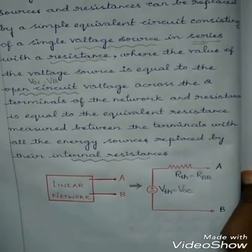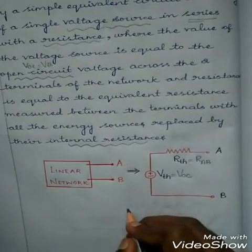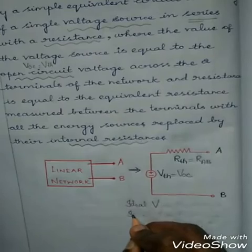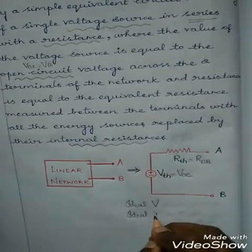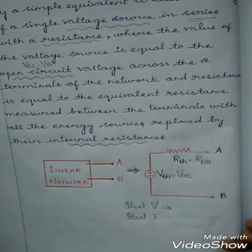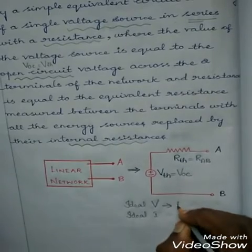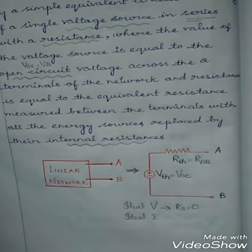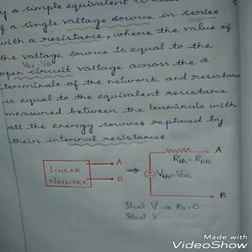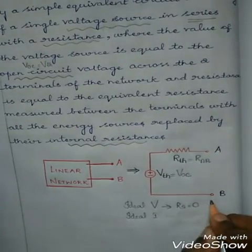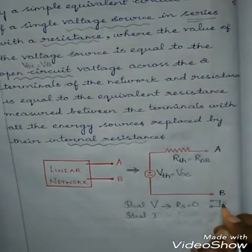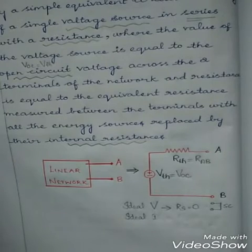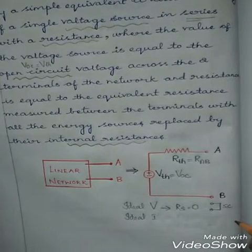What is the internal resistance of an energy source? There are two types: ideal voltage source and ideal current source. The internal resistance of an ideal voltage source is 0. If the internal resistance is 0, the circuit becomes a short circuit. So just replace the ideal voltage source by means of a short circuit while calculating RTH.